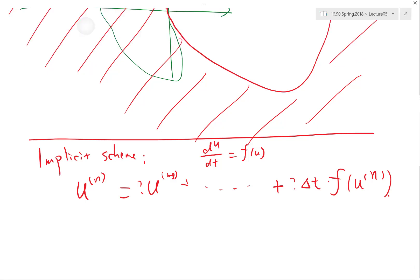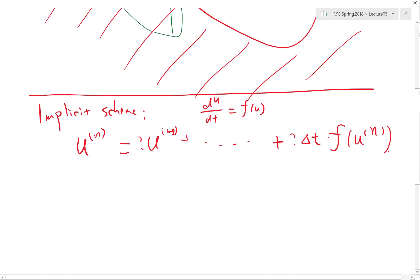And to this end, let's first give an example of an implicit scheme that's actually what we already know: backward Euler. So instead of taking a forward difference u^(n+1) - u^n, we are taking a backward difference u^n - u^(n-1).